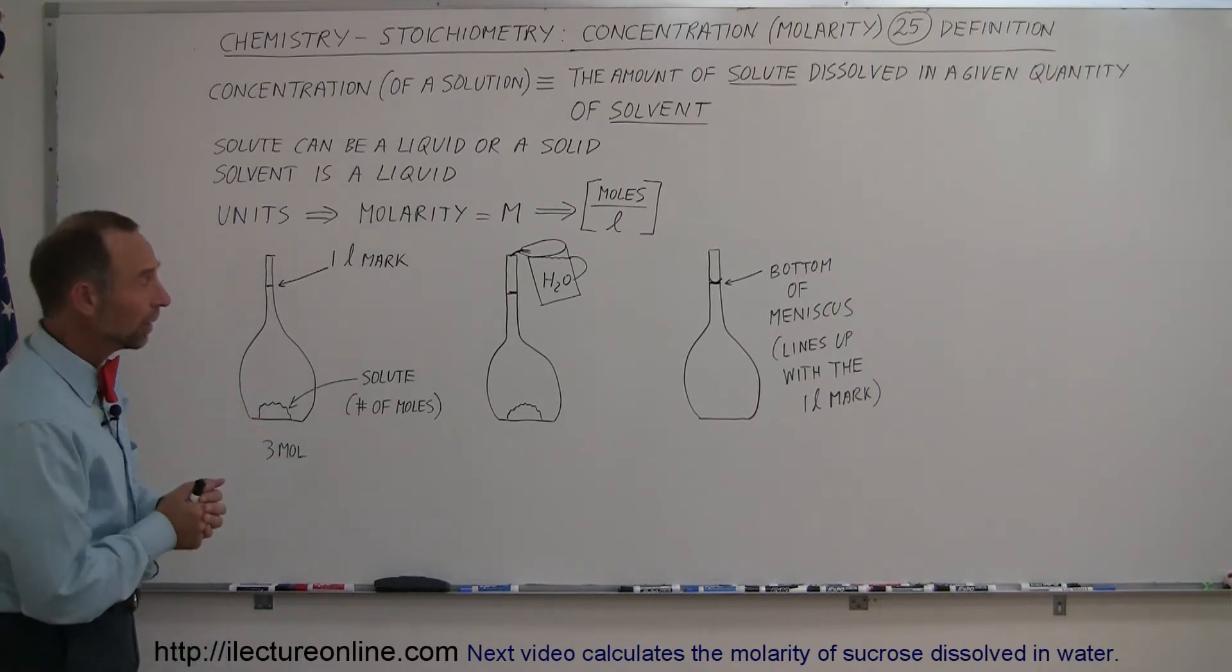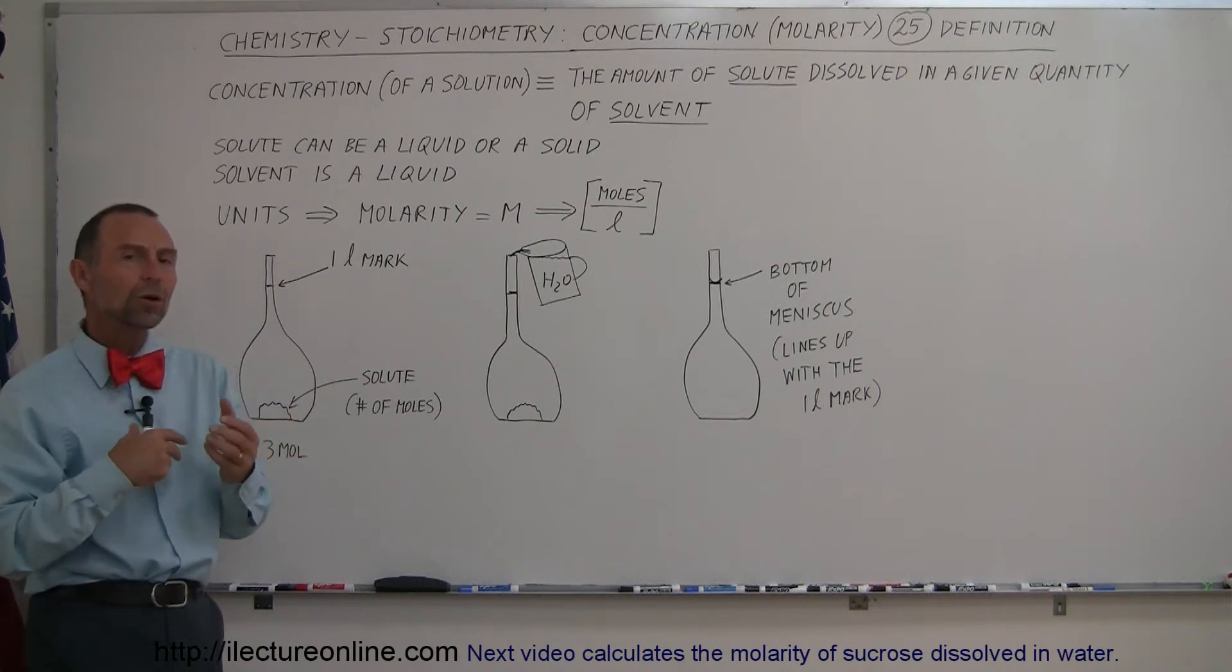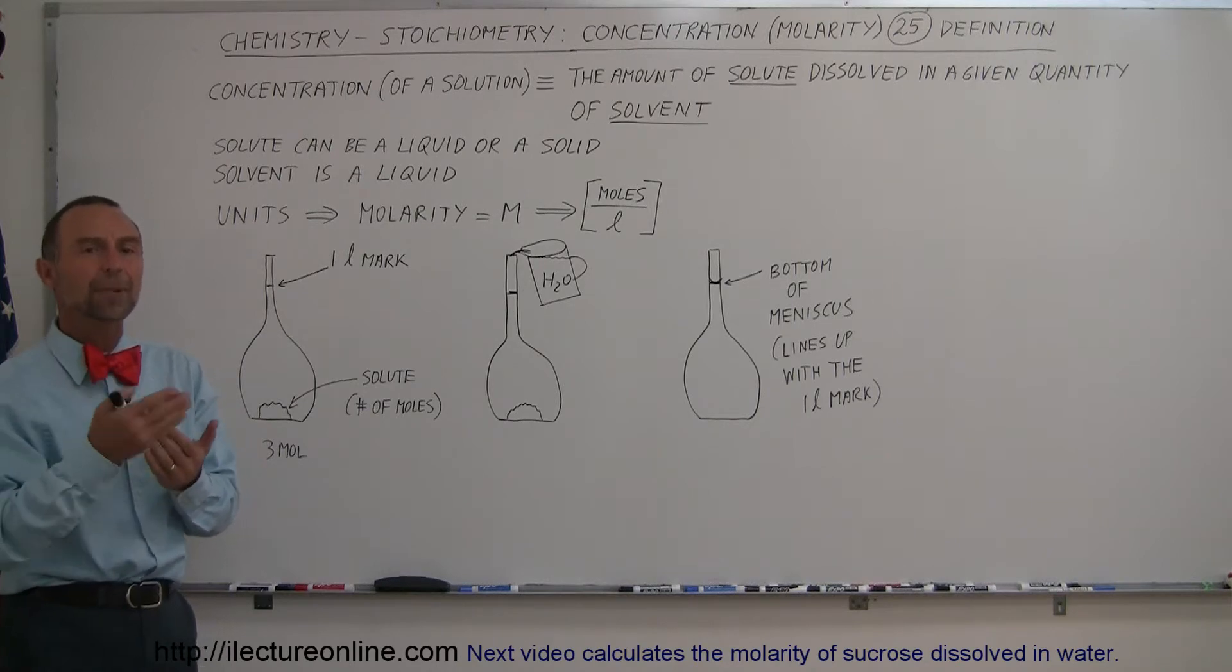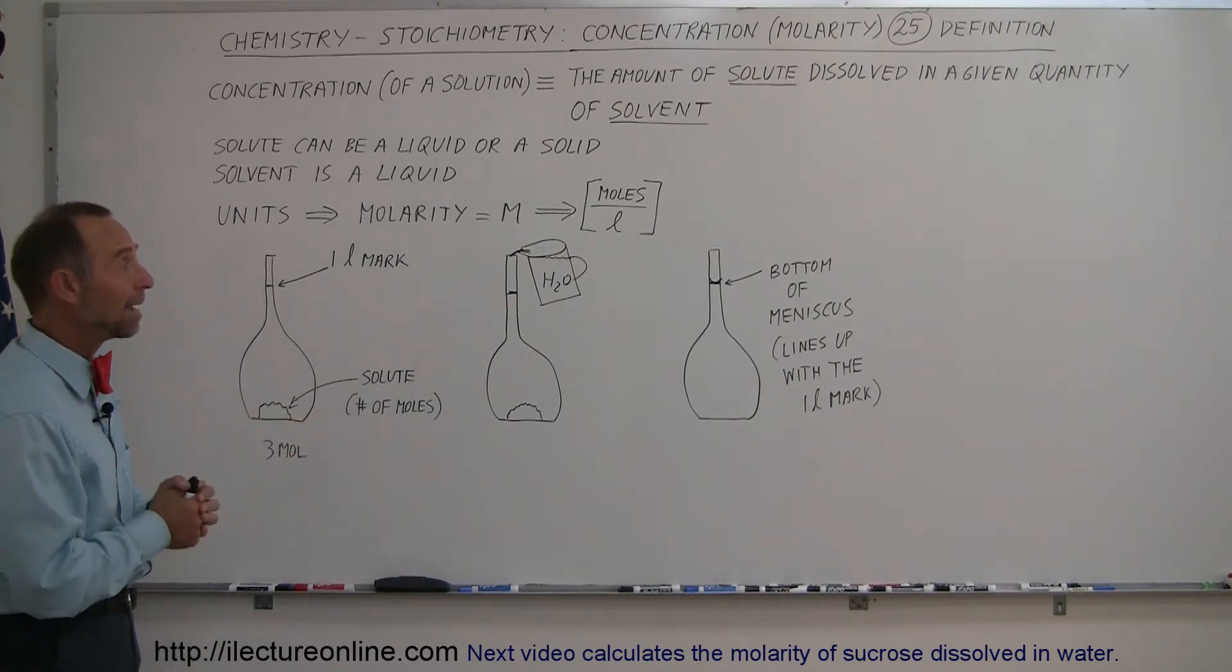Water is a solvent, and when we put stuff in the water, they tend to dissolve, and we want to know how much of the chemical is in the water. What is the concentration? How much of it per unit volume do we have?